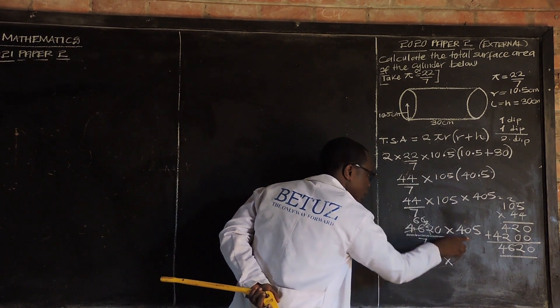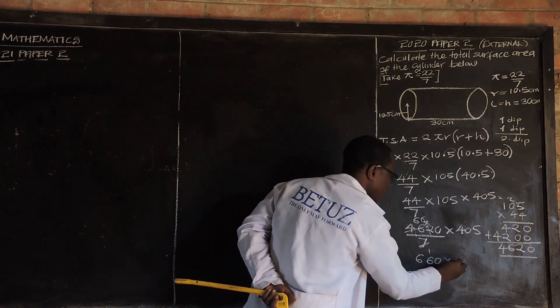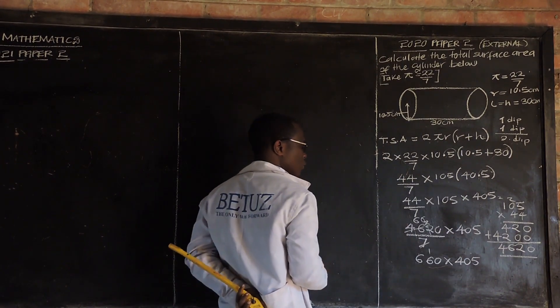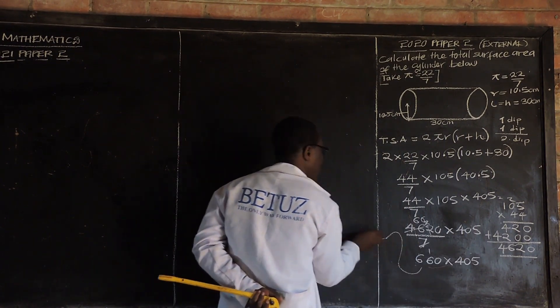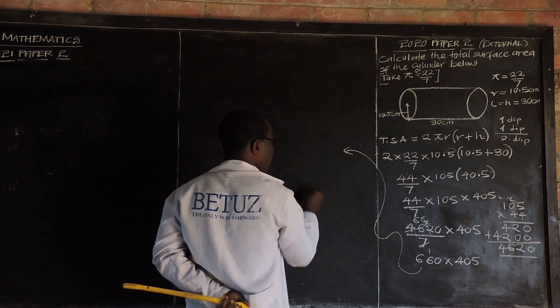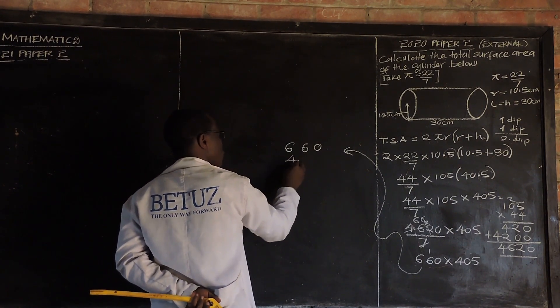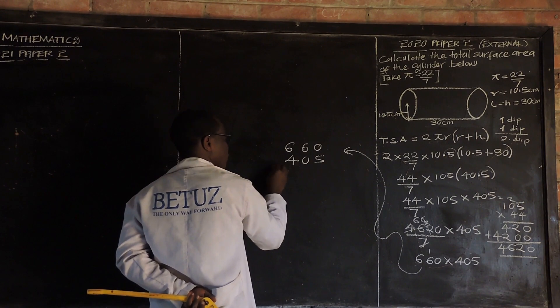Then, we multiply it by 405. So, let's multiply this by 405. We multiply from this side. So, we have 666 times 405.